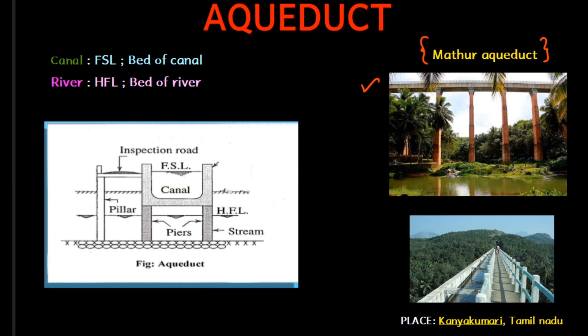What is an Aqueduct? Generally, there is a river, and there is a canal above that river. That is an Aqueduct.